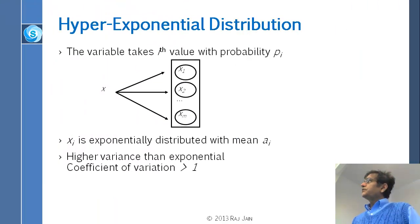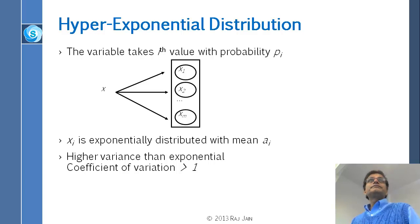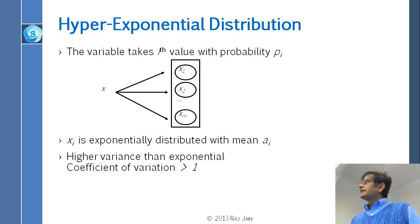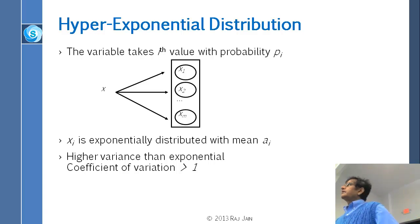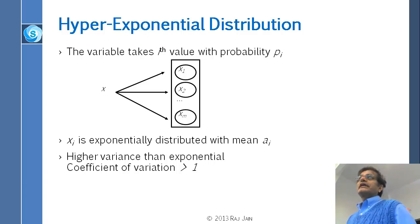Erlang distribution is simply the sum of exponentials in series — if you put multiple exponential stages in series, the total becomes Erlang. Hyper-exponential distribution results from putting exponential servers in parallel — you go to each with probability P1, P2, P3, etc. If you take the service time distribution for that kind of parallel setup, that would be hyper-exponential distribution.